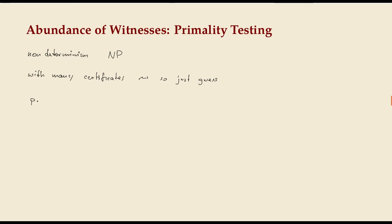Primes is easily seen to be in co-NP; it's not easily seen but can be shown to be in NP because you can give a tricky certificate for a number to be prime using some theorems from number theory. So it would have been one of these problems that might decide whether co-NP and NP actually fall together or not. But it was actually shown about 15 years ago that it's also in P.